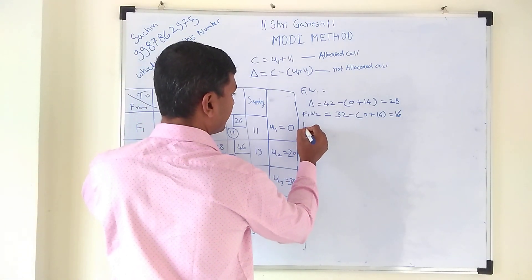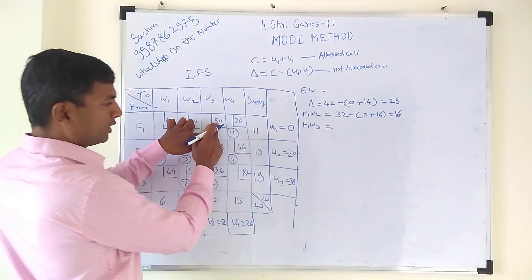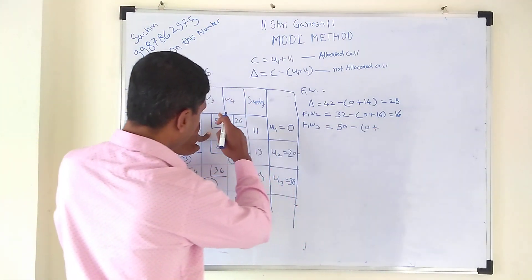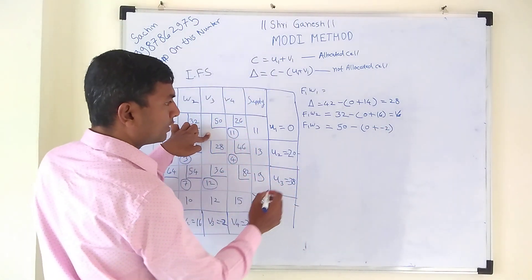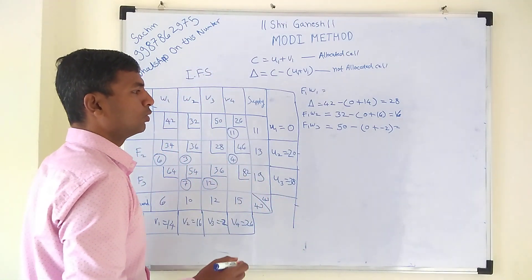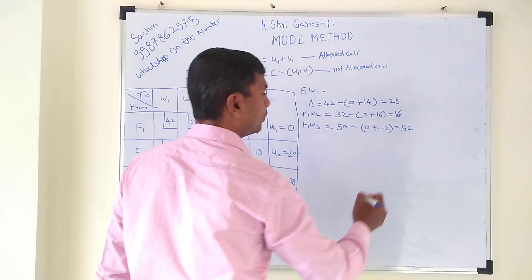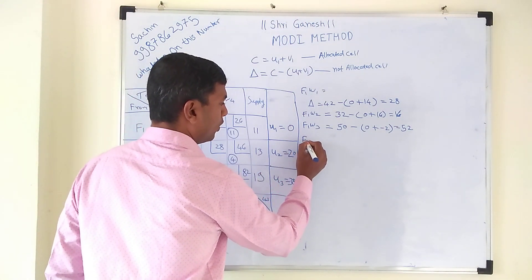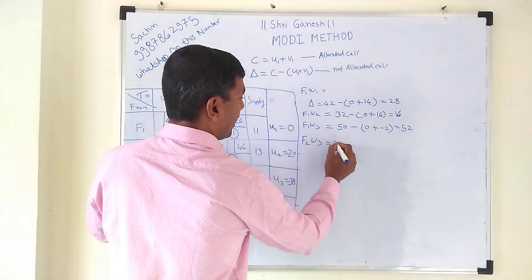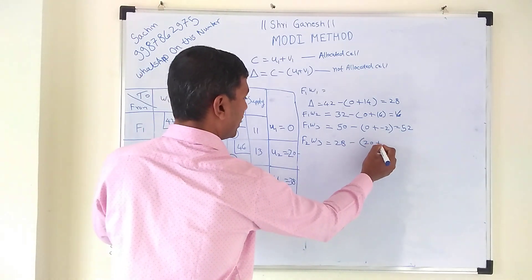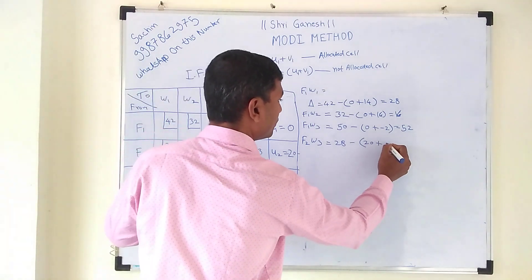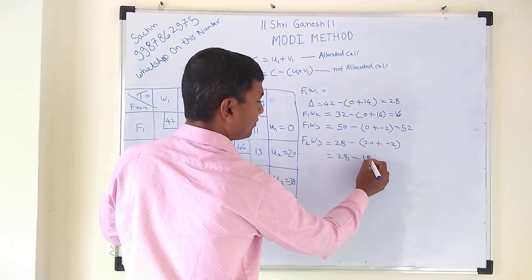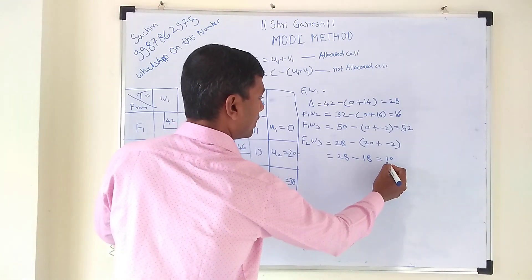Next is F1W3: delta = C − (u1 + v3) = 50 − (0 + (−2)) = 50 − (−2) = 52. Then F1W3 gives delta = 52. Continuing, the next unallocated cell gives delta = 28 − 18 = 10.